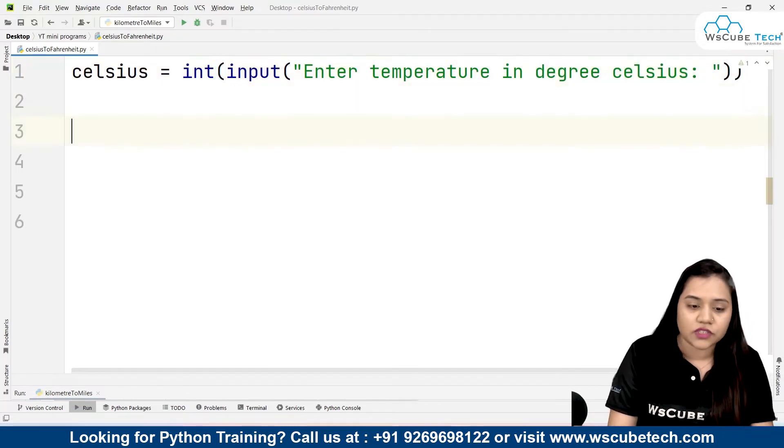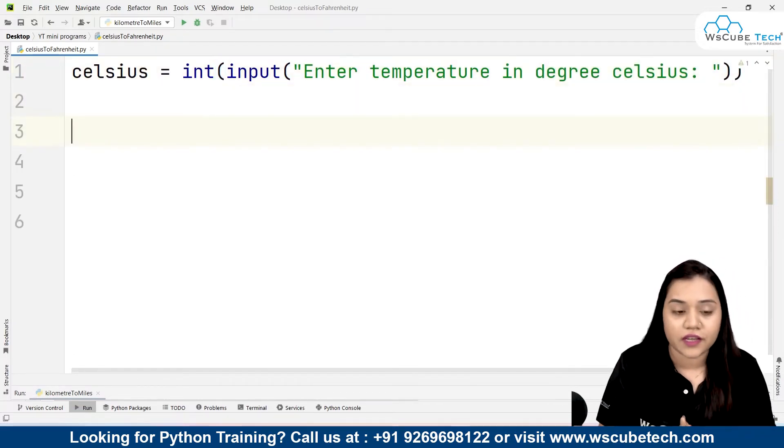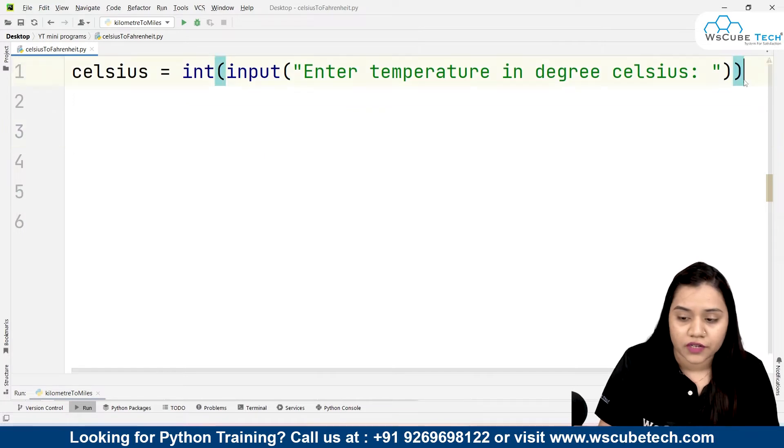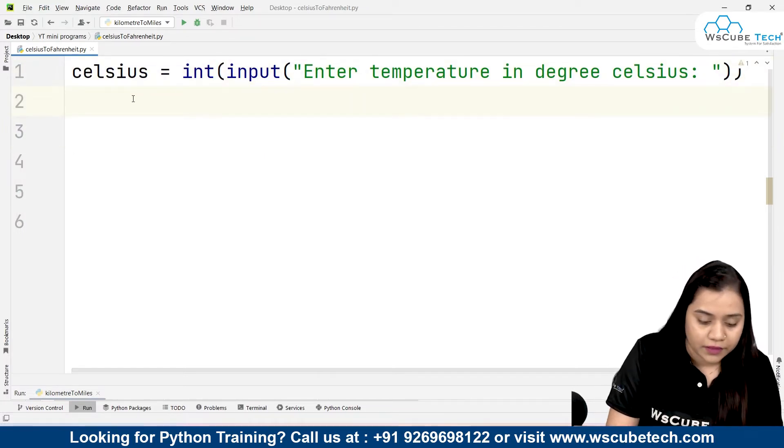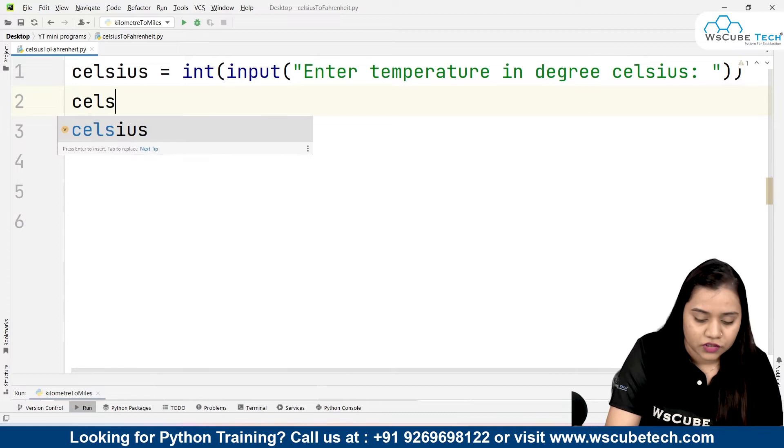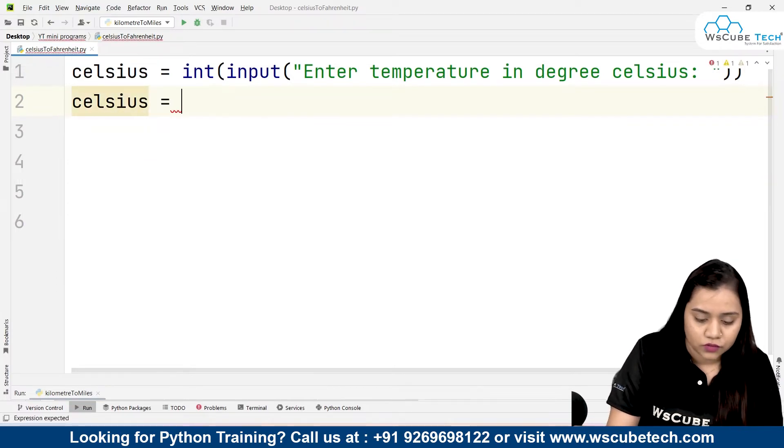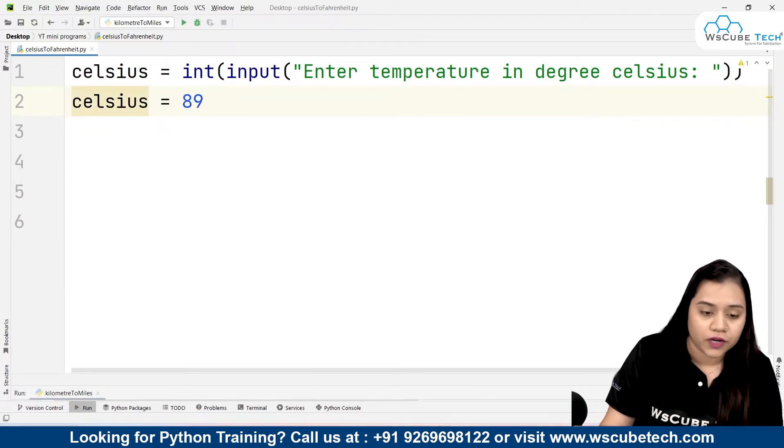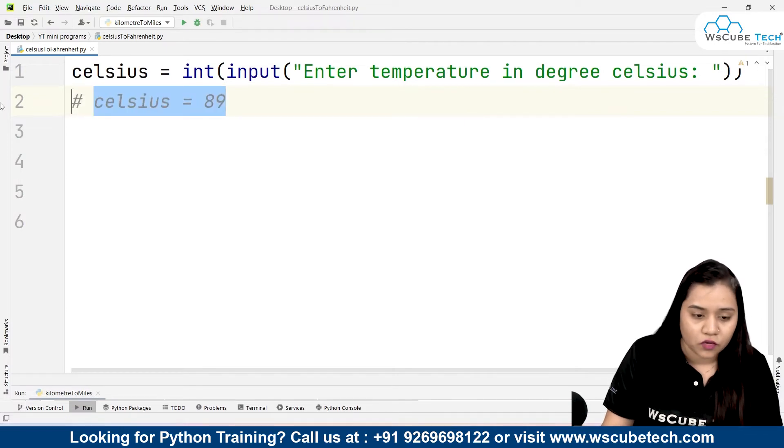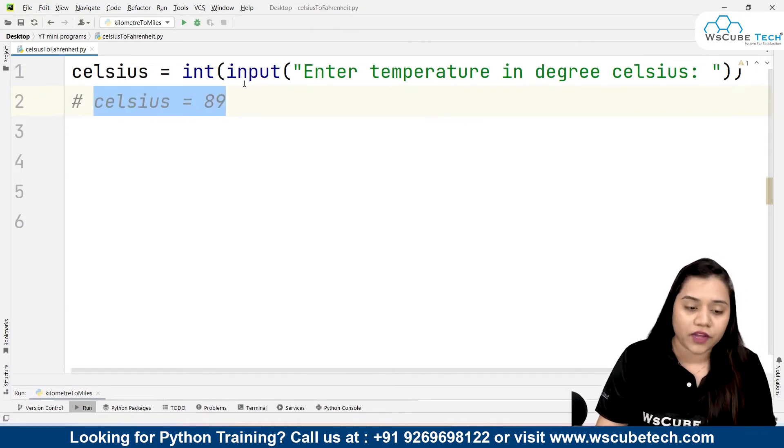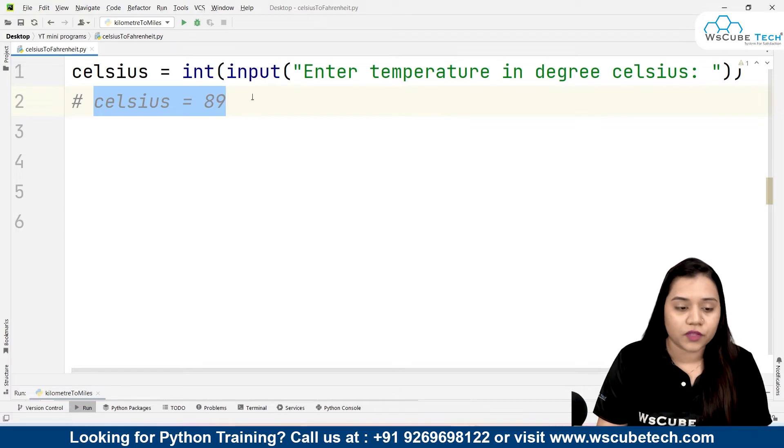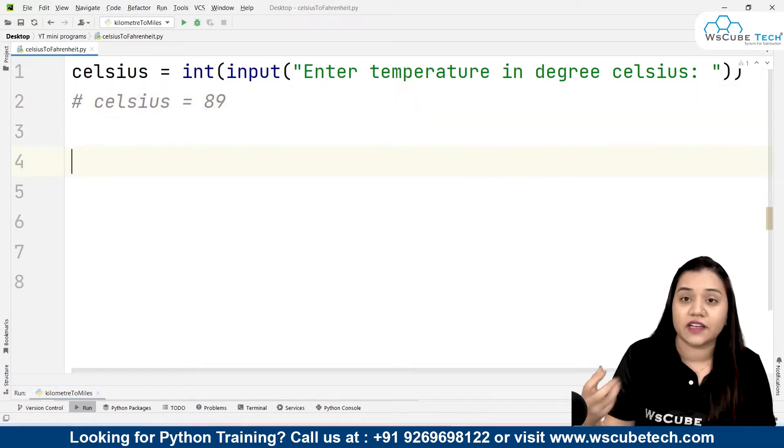Once someone has entered a temperature then degree Celsius. So here if you want you can take a user input or if you want you can take a predefined variable as well, so Celsius equals 89. In this way you can also do it. So I will just put it inside the comment. If you want you can take a predefined variable or if you want you can take an input from the user, so that I would recommend taking input from the user so that user can choose any degree Celsius.